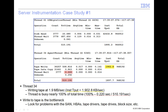Now that the bottleneck is known, a further examination of the tape subsystem is necessary. It could be a problem with the tape drive, the SAN, the TSM server HBA, or the tape driver. It would also be useful to calculate the tape write size by dividing the total bytes written (total KB in the output) by the number of writes (count in the output).